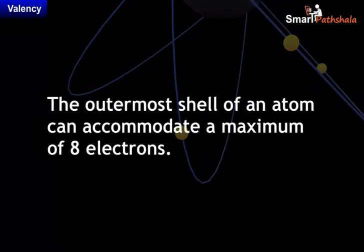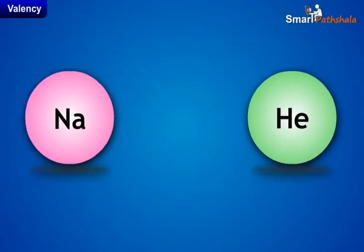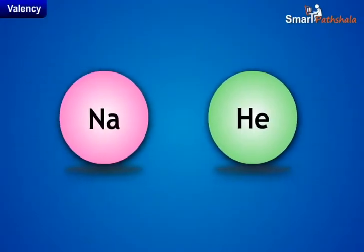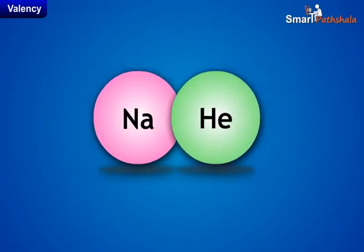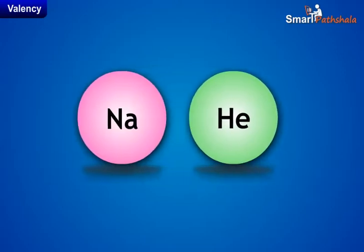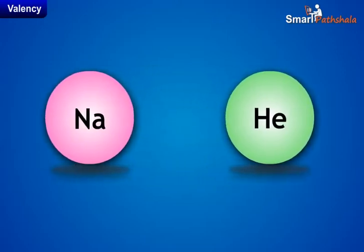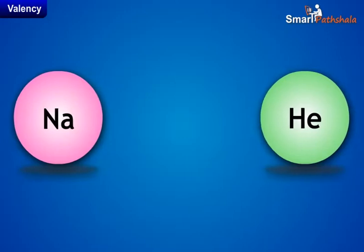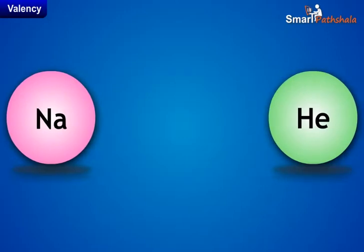The outermost shell of an atom can accommodate a maximum of 8 electrons. It was observed that atoms of elements having a completely filled outermost shell show little chemical activity. In other words, their combining capacity or valence is 0 because the octet is complete.